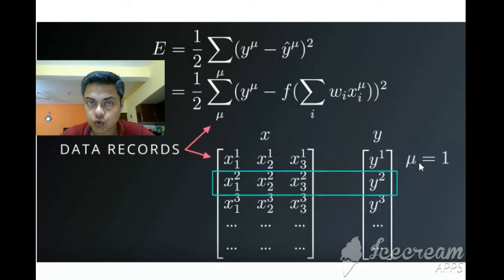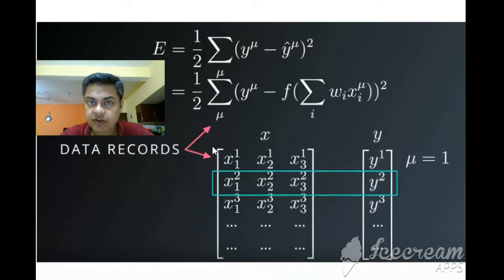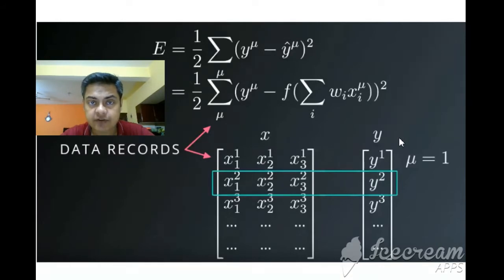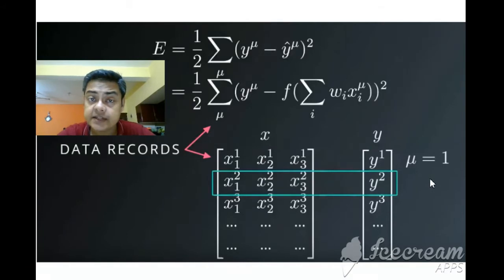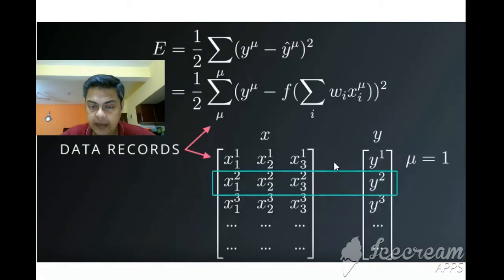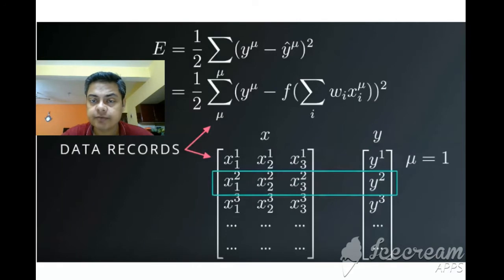Mu is basically the row index — each row in the data. The inputs x1, x2, x3 are presented in matrix form, and similarly y1, y2, y3 are in matrix form. The blue intersection shown corresponds to mu-2, the one above is mu-1, and the next is mu-3. That is the concept of mu.